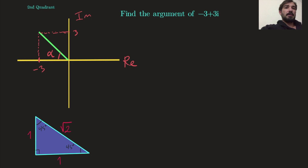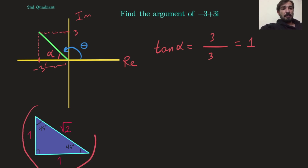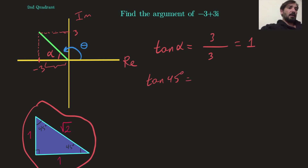My purpose is to find alpha first, then find theta — the required angle which is my argument. Using tangent alpha equals opposite over adjacent: opposite is 3, adjacent is 3. Don't use negative 3 — we're looking for distance from the origin, which is just 3 units. So tangent alpha equals 1. Tangent 45° equals 1, and tangent π/4 — since 180 divided by 4 is 45° — gives us 1.